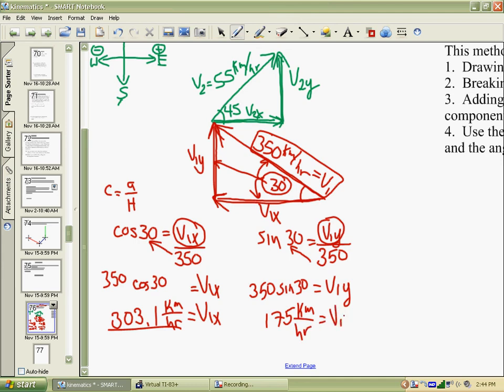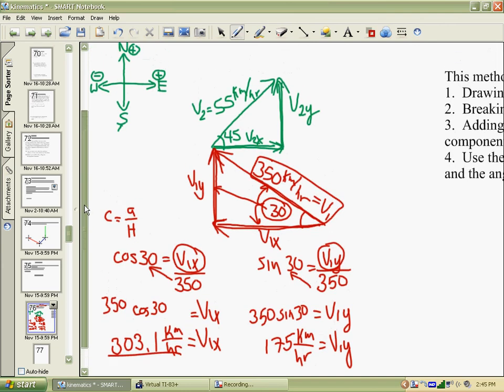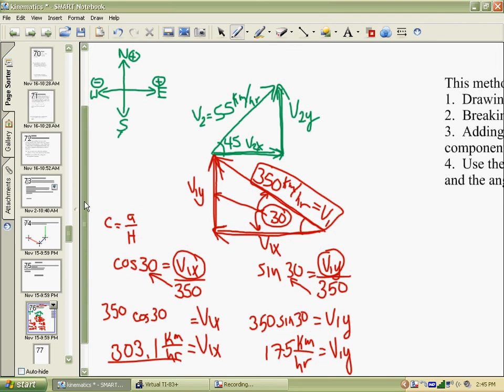I have to pay particular attention to my signs here. Anything that is going in this direction, to the west, should be negative. So I'm going to make the V1x negative 303. My V1y is north - anything north should be positive. So I'm going to make sure I've considered it and put a positive on there.